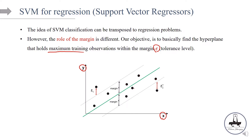Here we have X and Y — these are the observations. Let's say this green line is our hyperplane, and the majority of the observations are within the margin. A couple of observations are outside the margin — we're going to call them slack variables. This is slack variable Xi for one observation, and Xi star for another. The slack variables are the observations outside of your tolerance level, outside the margin.